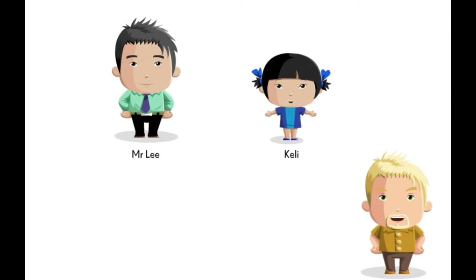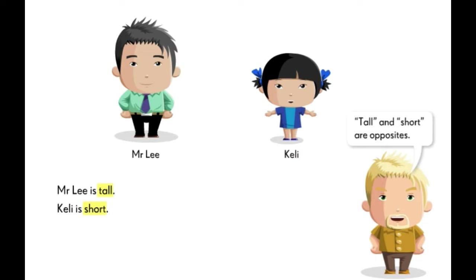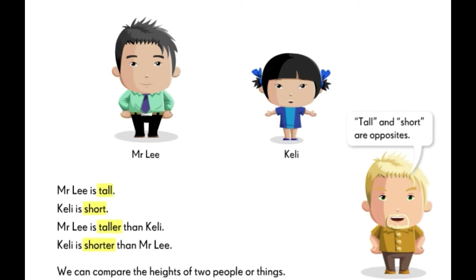Let's look at these two people. Mr. Lee is tall. Kelly is short. Tall and short are opposite. Mr. Lee is taller than Kelly, and Kelly is shorter than Mr. Lee. Now you can compare the height of two people or things.